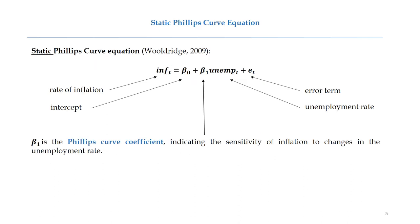The static Philips Curve, which was initially used, has the following formula. On the left-hand side is the inflation, while on the right-hand side there are the intercept, Philips Curve coefficient, unemployment, and the error term. All data with subscript t signify that they refer to the current period. Remember that beta1 represents the Philips Curve coefficient, which is very important for testing hypotheses in empirical research.